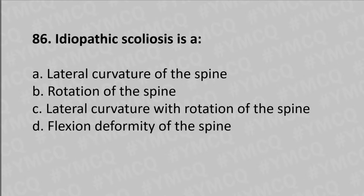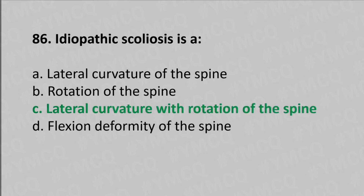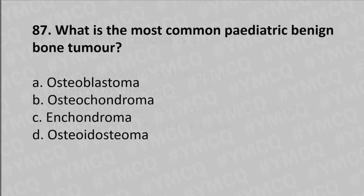Moving to our 86th question: idiopathic scoliosis is option A lateral curvature of the spine, option B rotation of the spine, option C lateral curvature with rotation of the spine, option D flexion deformity of the spine. The answer is option C, lateral curvature with rotation of the spine.